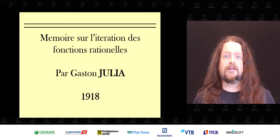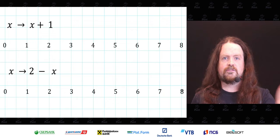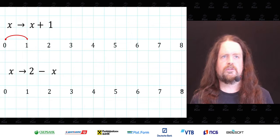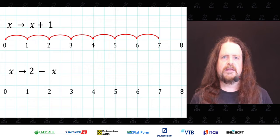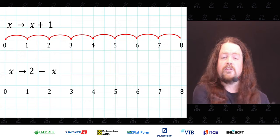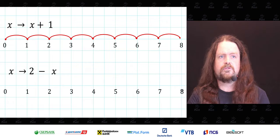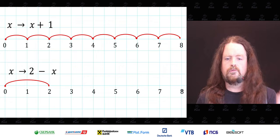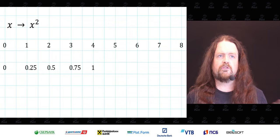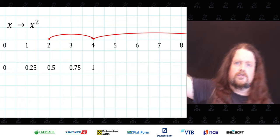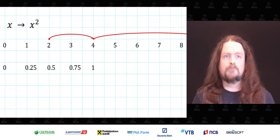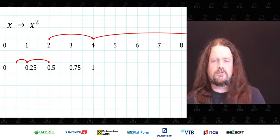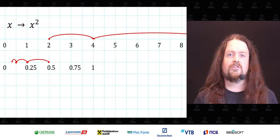What Julia and Fatou were studying was not solving equations but studying the behavior of equations. Take the function x goes to x plus one: starting at zero, we get one, two, three — no surprises, it just goes all the way to infinity one number at a time. Another function, x goes to two minus x: two minus zero is two, two minus two is zero — a stable repeating system. With squared numbers starting at two: two squares to four, four to sixteen, 256, off to infinity. Starting with a half: a half squares to a quarter, to one sixteenth, tending toward zero.